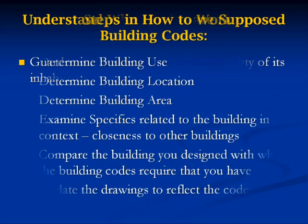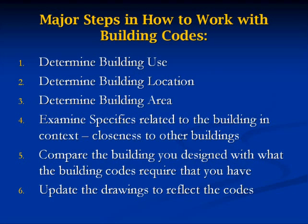In order to understand the big picture of how to work with building codes, there are six primary things that you need to consider. The first is: what is the use of the building? Whether it's a house, a new commercial construction, or a place of worship. After that, you need to know the building location, which is dictated by the piece of land you're going to be building on. If you have a certain use in mind but you can't build in the place you want, or can't build things large enough, that's a problem.